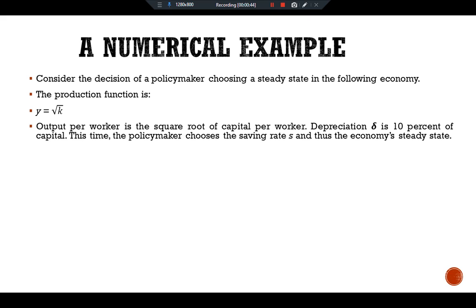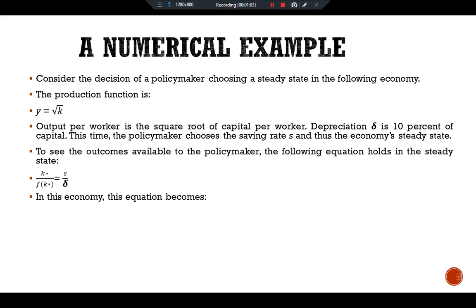To see the outcomes available to the policymaker, the following equation holds in the steady state: k static divided by f(k static) equals s over delta. In this economy, this equation becomes k static divided by square root k static equals s divided by 0.1.